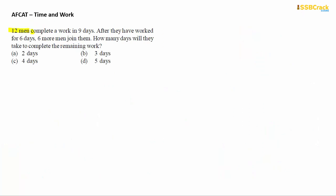12 men complete a work in 9 days. After they have worked for 6 days, 6 more men join them. How many days will they take to complete the remaining work? This is again a remaining work concept question. 12 men work for 6 days, then the group becomes 18 men to finish the rest.